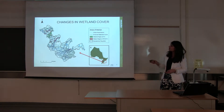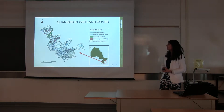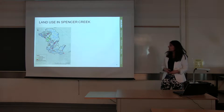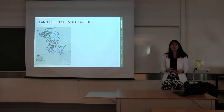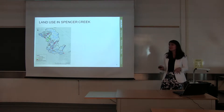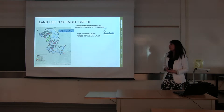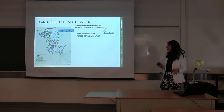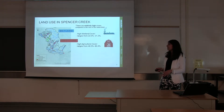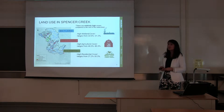Looking at the Spencer Creek Watershed, data collected in 1978 compared to data collected in 2015 shows a distinct change in wetland cover. Using data from the Hamilton Stewardship Action Plans, the land use cover was delineated into three separate zones: wetland dominated towards the headwaters, moving downstream into an agriculturally dominated area, and finally an urban area.